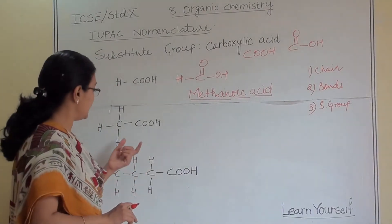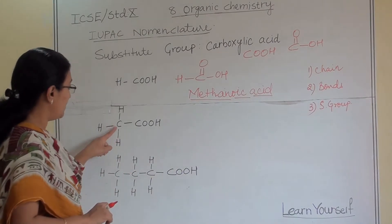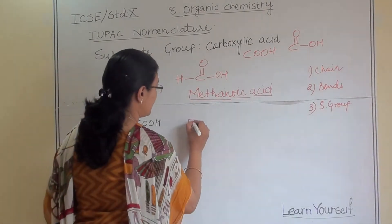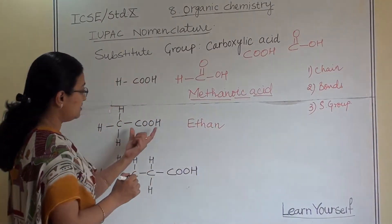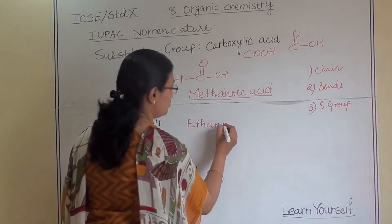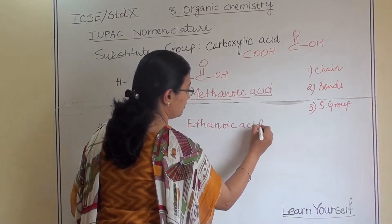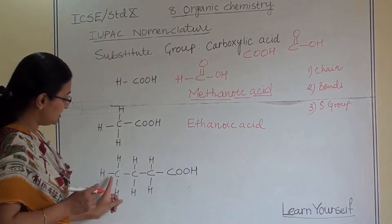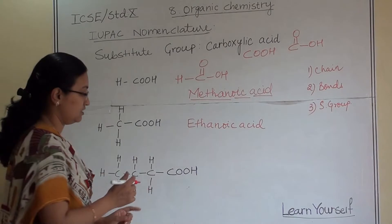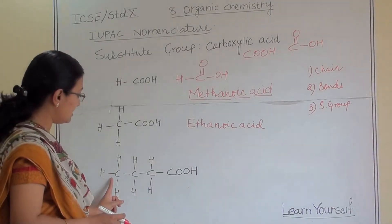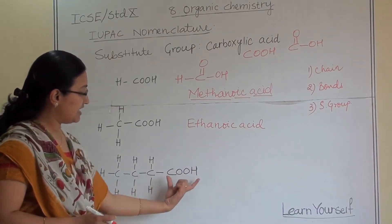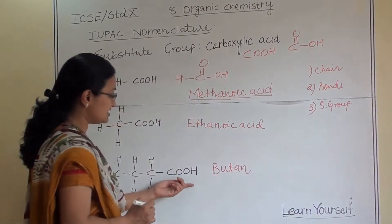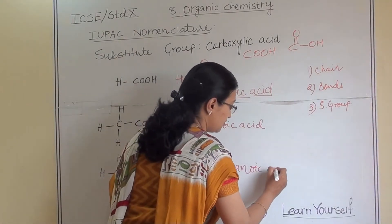For the second carboxylic acid structure: two carbon atoms are present, one with three hydrogens and one with COOH. So the name is ethanoic acid. For the third structure, counting all carbons including the COOH carbon gives four carbon atoms total — three plus one — so the name is butanoic acid.